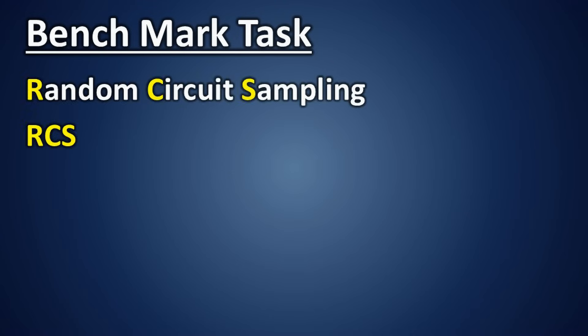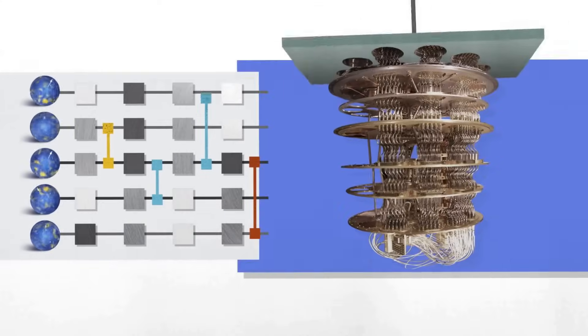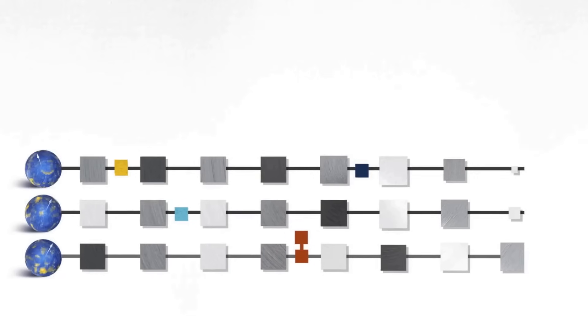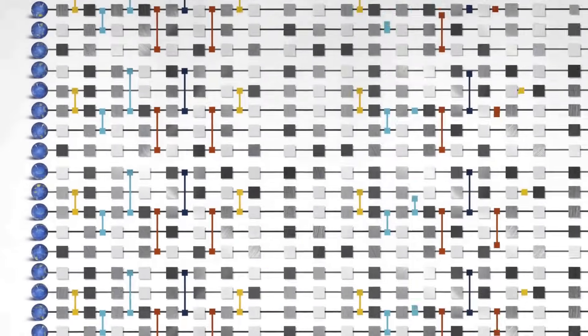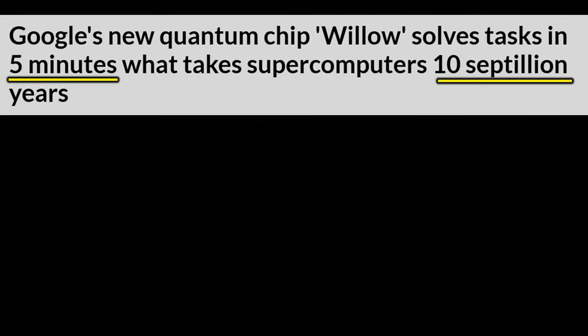To measure the capability of quantum computers, a commonly used benchmark is a task called random circuit sampling, RCS. RCS is a type of calculation that quantum computers are particularly good at solving. However, it is extremely difficult for classical computers to handle. Because of this, when we compare the performance of quantum and classical computers using RCS, we often see results like a quantum computer solving a problem in five minutes that would take a classical supercomputer billions of years.